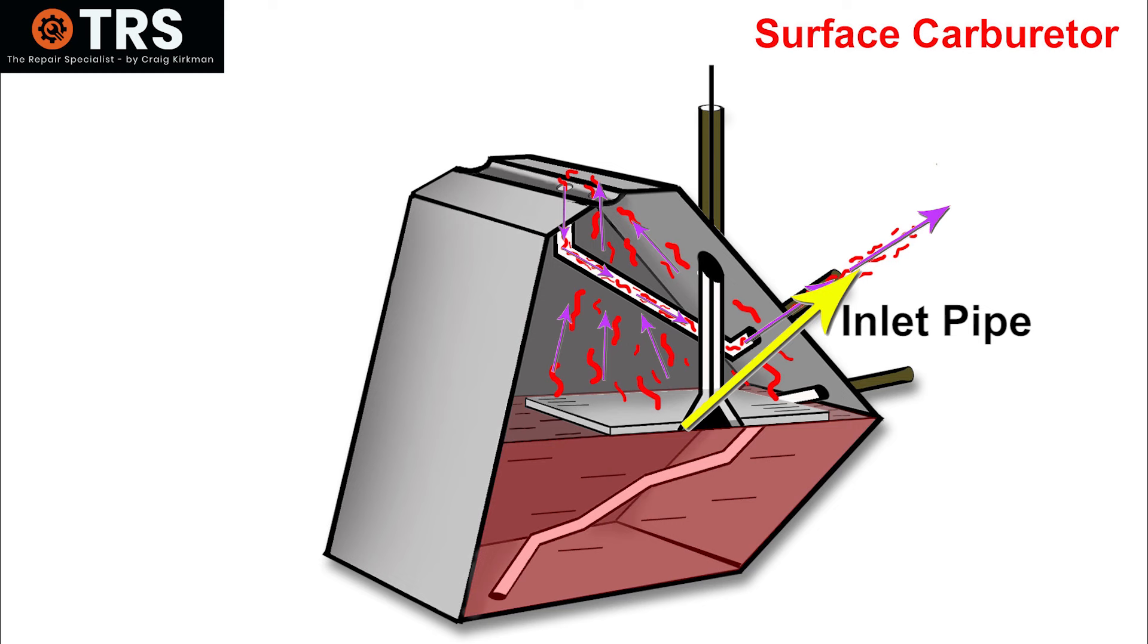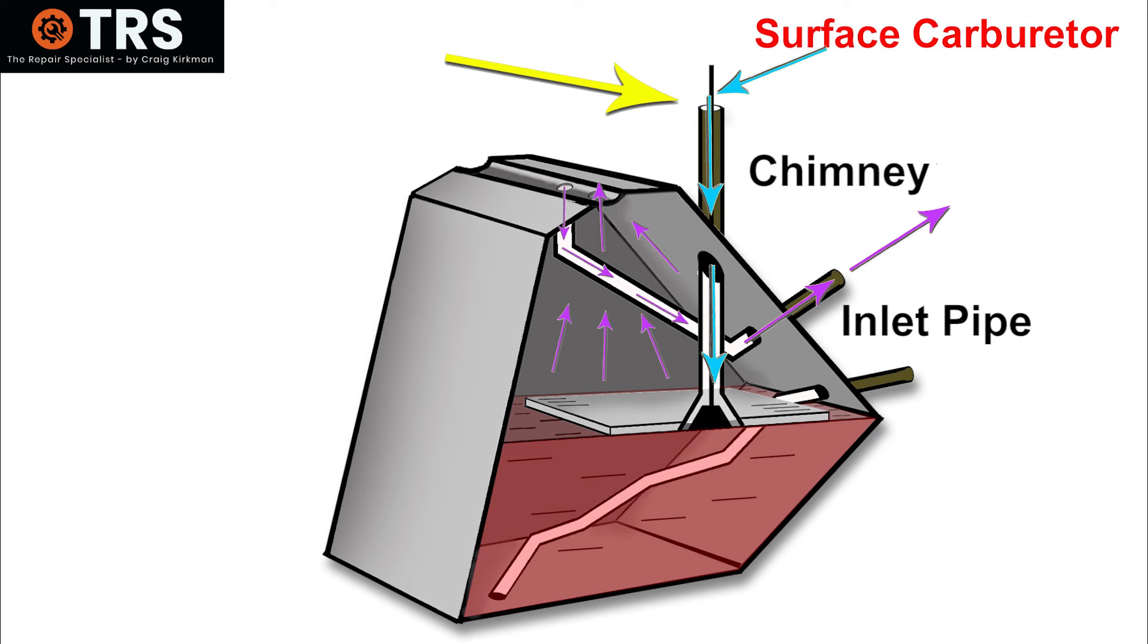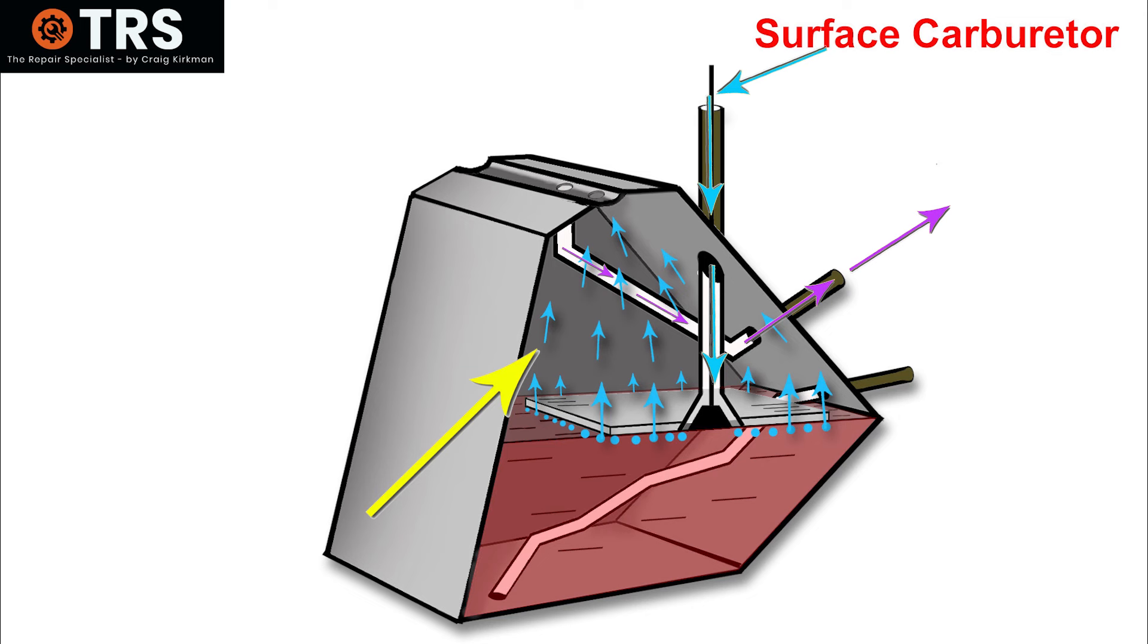But as the suction pressure built up within the carburetor, it drew in air from the outside via the chimney. And so as air was pulled in through the inlet and down the chimney, it was then drawn out the bottom of the chimney, past this very small one-way valve float, and displaced underneath the plate as bubbles through the fuel and out into the space of the carburetor, creating that flow of air.